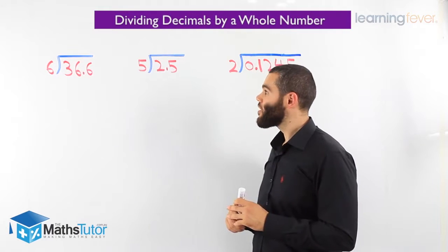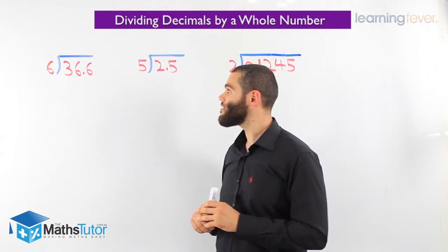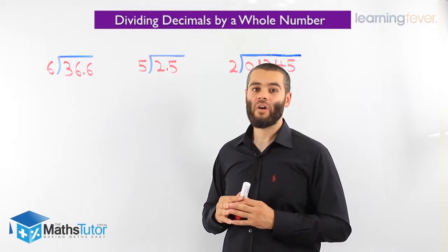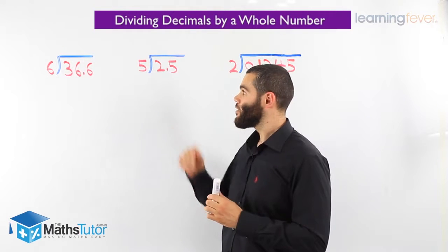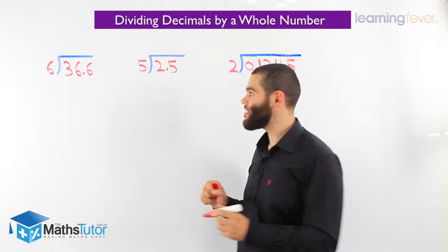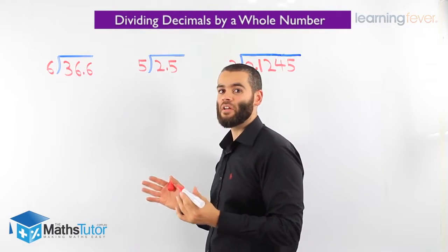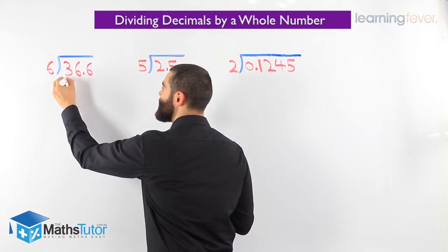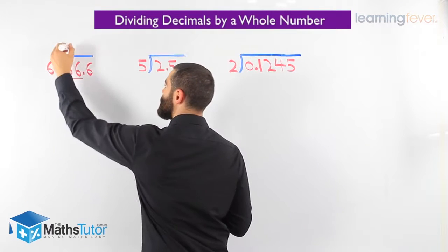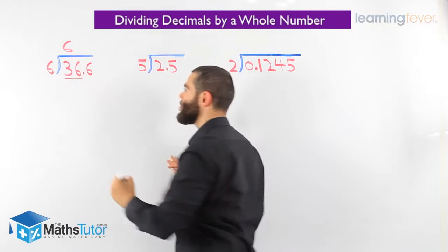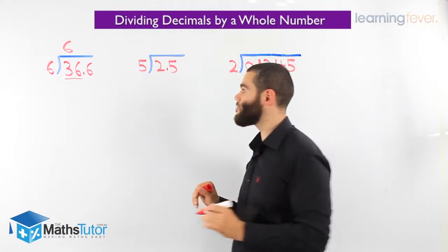Let's look at the first example. We have 36.6 divided by 6. We ask ourselves, how many 6's go into 3? We know that can't happen. Then we move on and ask, how many 6's go into 36? We know 6 goes into 36 6 times.